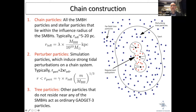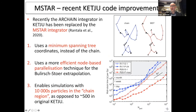We've also recently made additional improvements. We introduced a new integrator called MSTAR that uses a minimum spanning tree instead of a chain — a different way of ordering inter-particle distances. We also improved the parallelization of the Bulirsch-Stoer extrapolation. The plot shows in blue the old version and the improved version, which reaches much better parallelization and can handle a much higher number of particles in the high-resolution chain region.